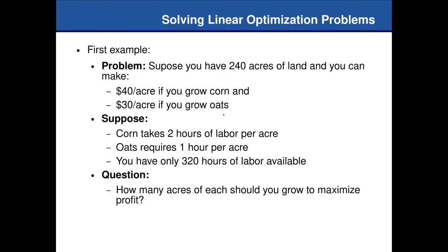Let's start with this problem. Suppose you have 240 acres of land and you want to grow either corn, oats, or both in different proportions. Consider you make forty dollars an acre if you grow corn and thirty dollars an acre if you grow oats. Those numbers give us a profit formula — our objective function: forty times the number of acres of corn plus thirty times the number of acres of oats.